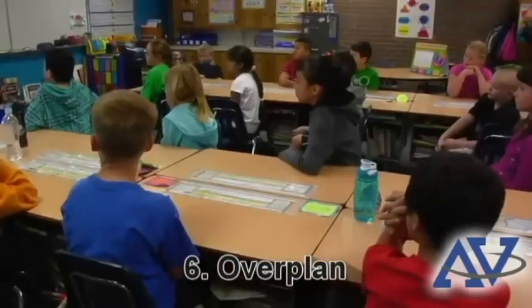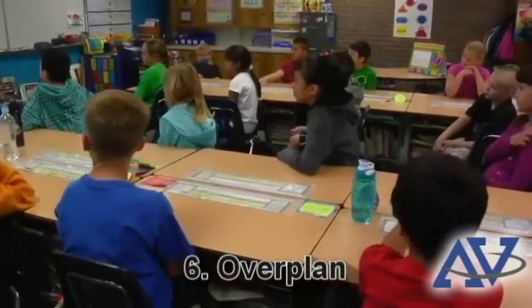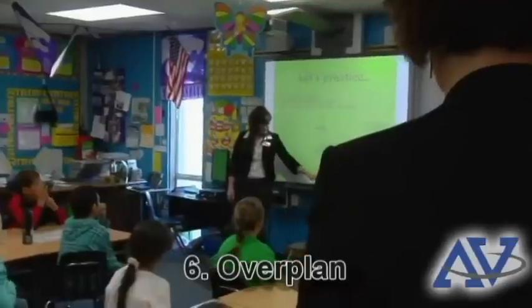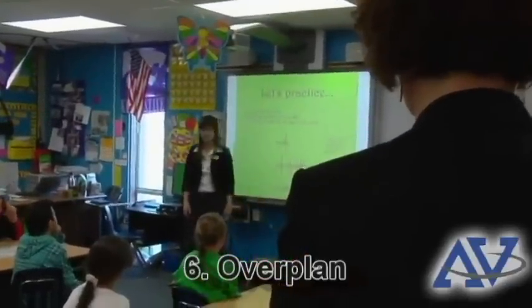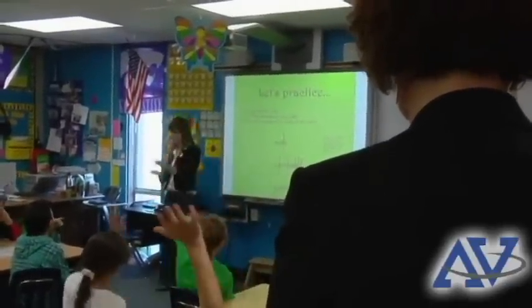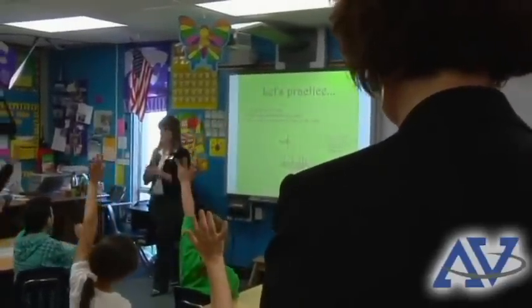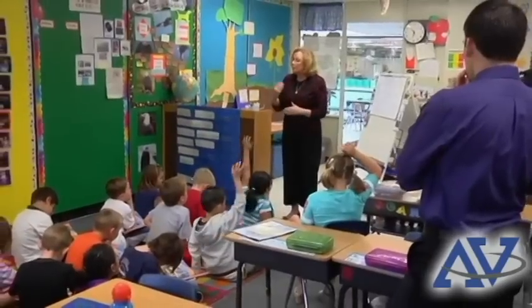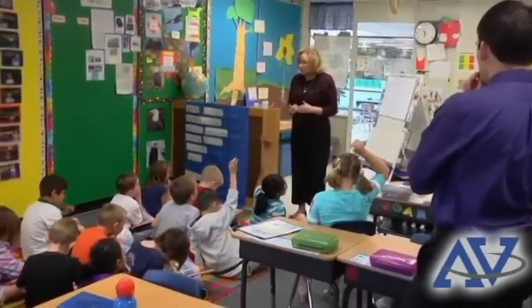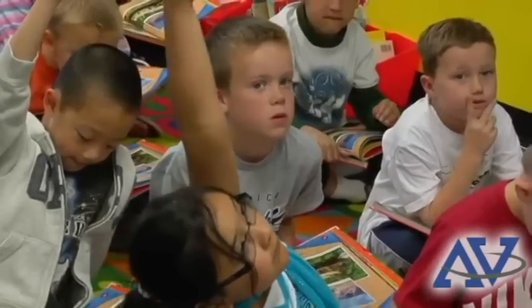Number six, over plan. Make sure you have plenty of activities to cover classroom time. It is wise to have several go-to activities to do if and when your lessons finish early. It is sometimes a point of no return when students realize they are done with planned activities.